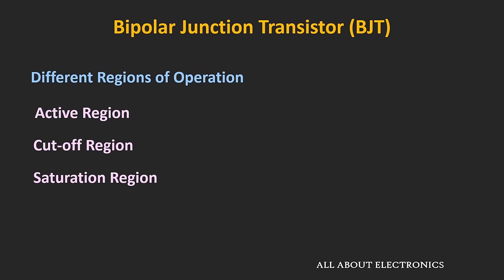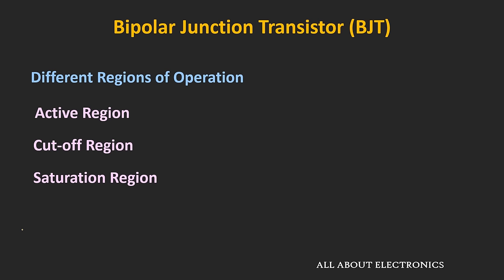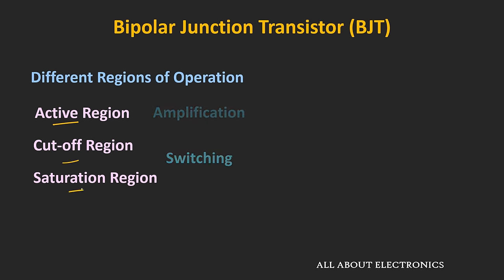For the PNP transistor in the active region of operation, the base-emitter junction is forward biased and the collector-base junction is reverse biased. But in this case, the emitter voltage is greater than the base voltage, and the base voltage is greater than collector voltage. So for the PNP transistor, the emitter voltage should be greater than base voltage and base voltage greater than collector voltage for active region operation. Whenever the BJT is used for amplification, it is used in the active region, and whenever it is used as a switch, it is used in the saturation and cut-off regions.